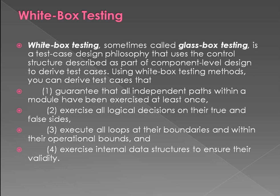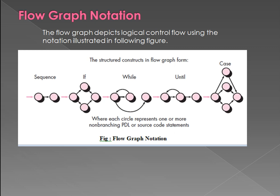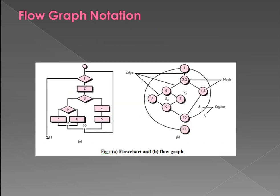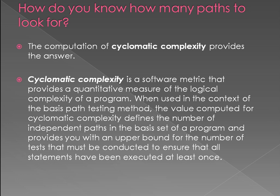We have covered basic path testing and how we can determine the flow graph notation, how we can draw the flow graph. What is meant by edges, what is meant by nodes, and what are the regions — all those things we have covered. Next we discussed how many independent paths are there for this diagram. If you have any doubt you can check my previous session.